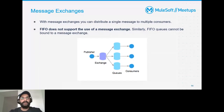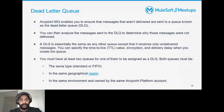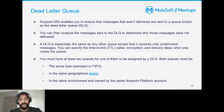Another type is the Dead Letter Queue — DLQ. A DLQ, as the name suggests, is used for messages that are not successfully delivered. You can look at DLQ messages to determine what errors occurred, how many times delivery was retried, and what happened to each message.